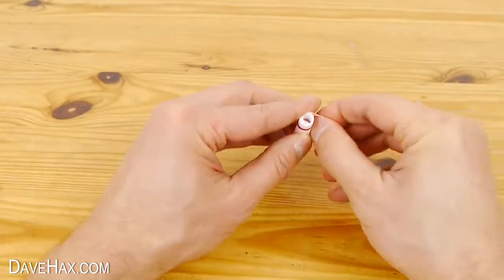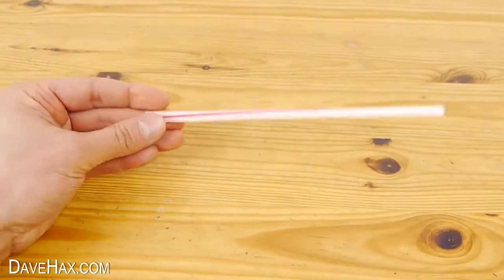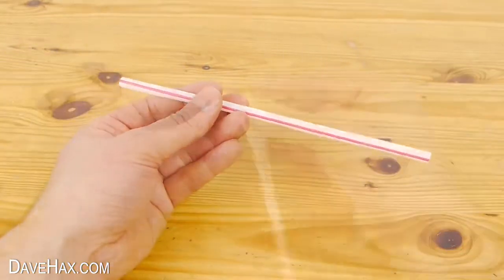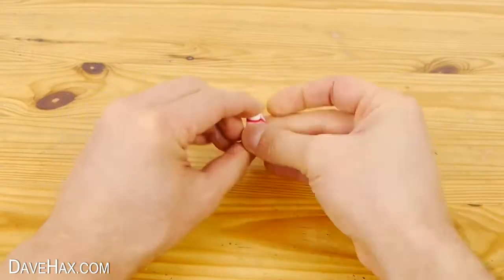If you were to let it go, it would spring back out into the shape of a straw. Pretty cool, huh? But we're going to hide it in the palm of our hand, like this.